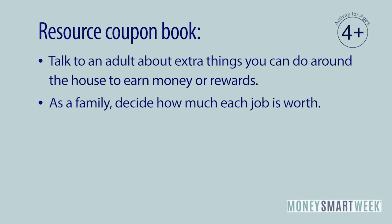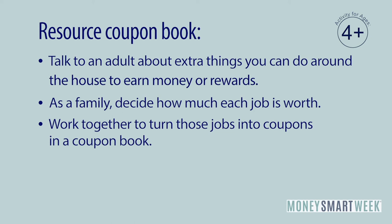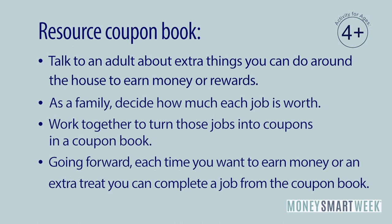Once you have the final list of jobs and their values ready, it's time to turn them into coupons. A coupon can be a piece of paper or a graphic that shows the job and its value, plus any decorations you want to add. Put all of the coupons together in a book using any paper and writing materials you have on hand. Now, as a family you know what jobs need to be done and how much each job is worth. Going forward, each time you want to earn money or a treat, you can complete a job in the coupon book. As you continue to use this activity, it can help to talk about how you plan to use the money. When you make a decision to spend it or save it, talk it through with an adult and tell them what you're thinking and feeling as you weigh your choices.